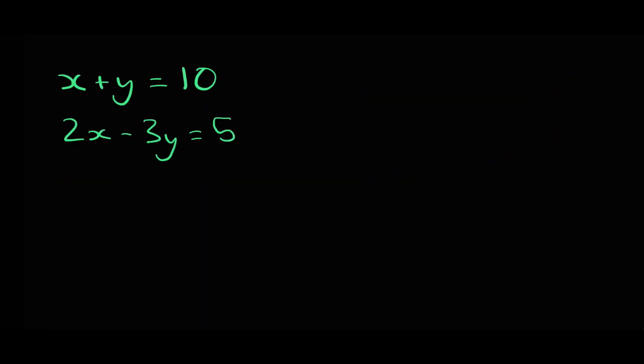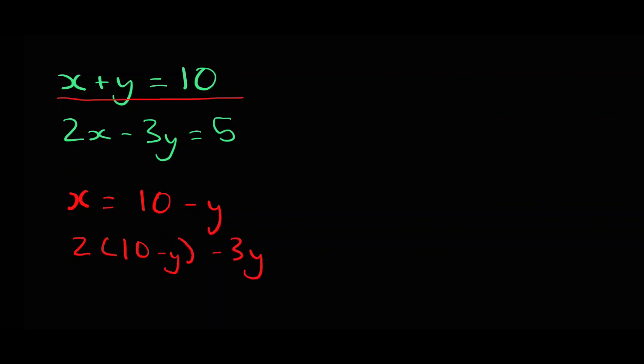Now let's move on to the substitution method. To do the substitution method, the first thing you have to do is rewrite one of the equations so you have one variable in terms of the other. For example, we could take the first equation and write x in terms of y, so x would be 10 minus y. Now that we have x in terms of y, we can substitute that expression into the other equation in place of x, so we have an equation with only y's.